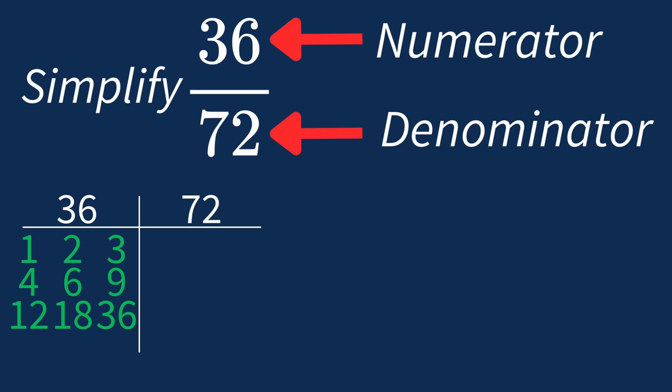For 72, the factors are 1, 2, 3, 4, 6, 8, 9, 12, 18, 24, 36, and 72.